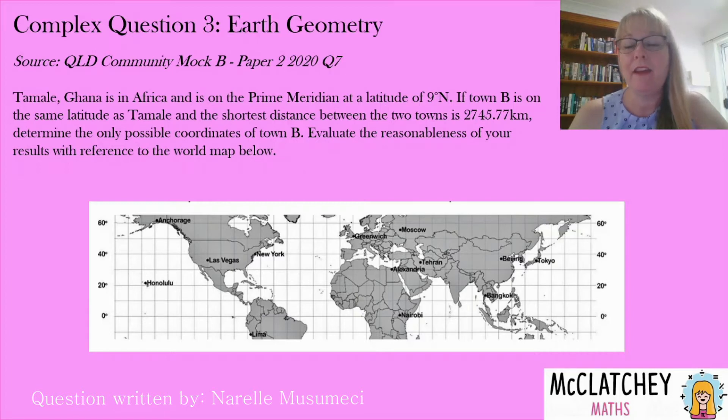Tamale in Ghana is in Africa and is on the prime meridian at a latitude of nine degrees north. If town B is on the same latitude as Tamale and the shortest distance between the two towns is 2,745.77 kilometres, determine the only possible coordinates of town B and evaluate the reasonableness of your results with reference to the world map below.